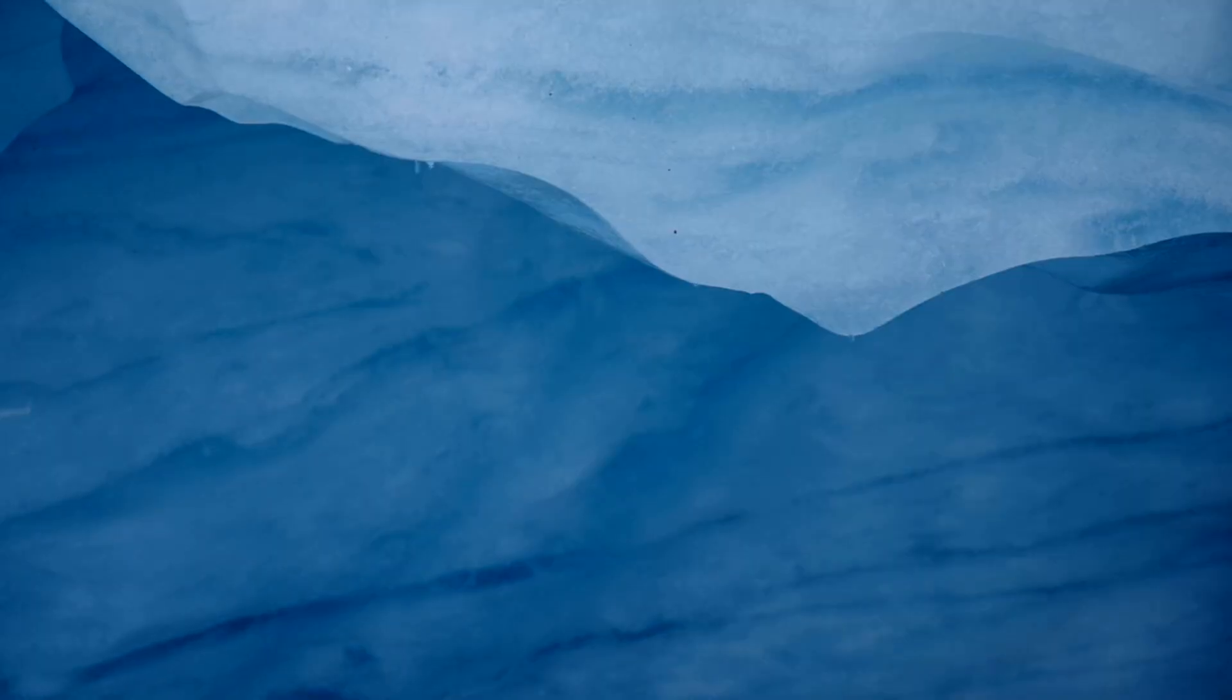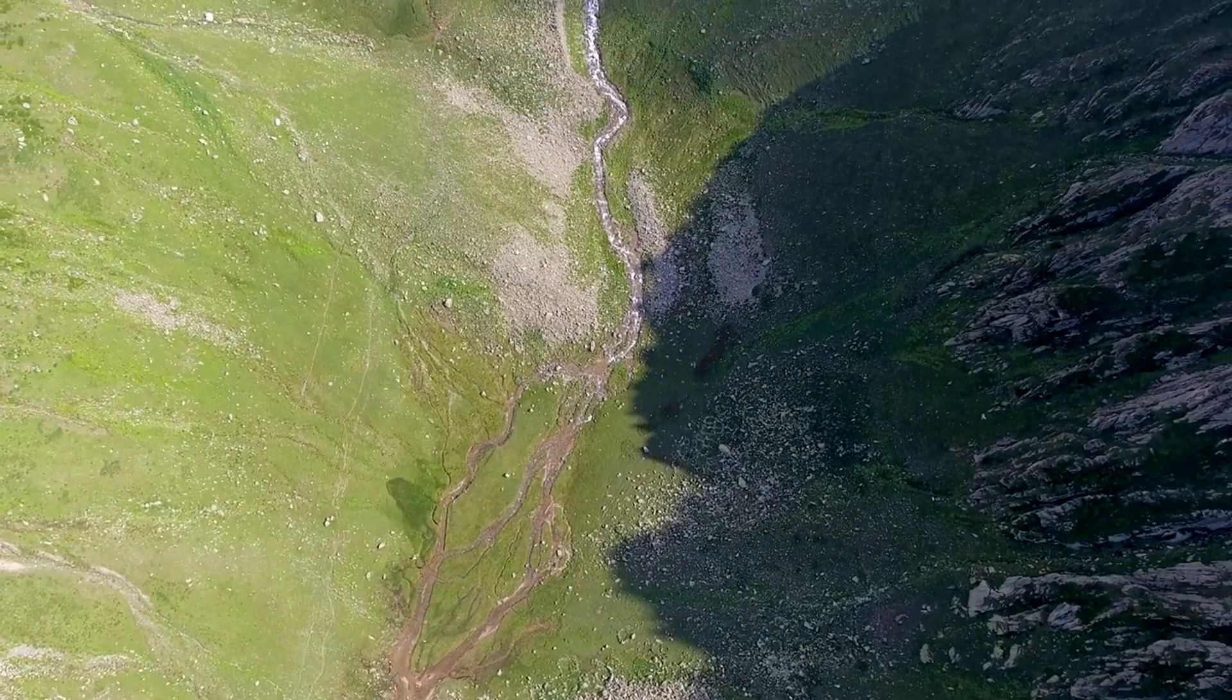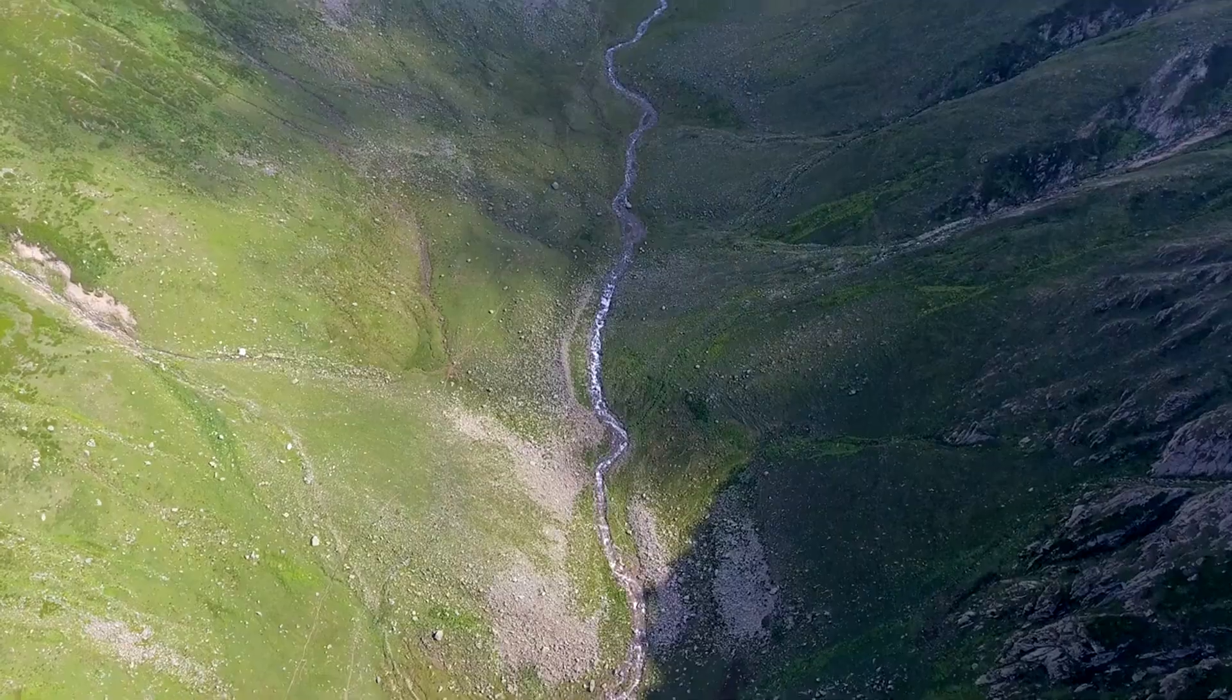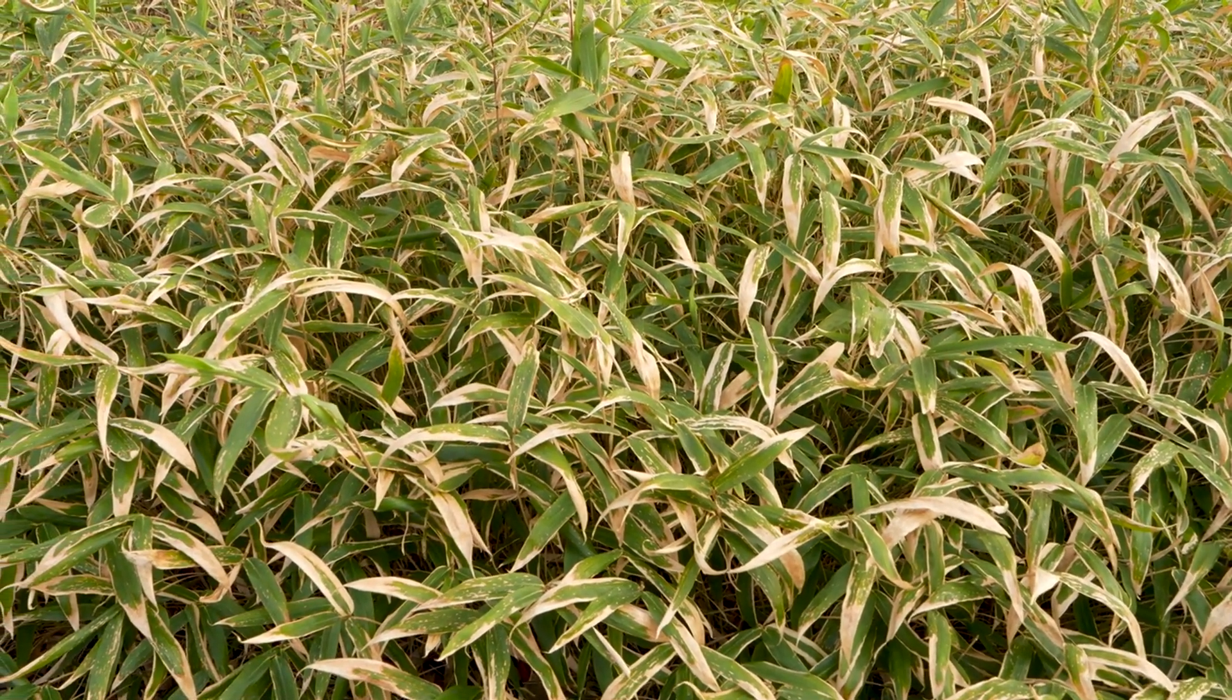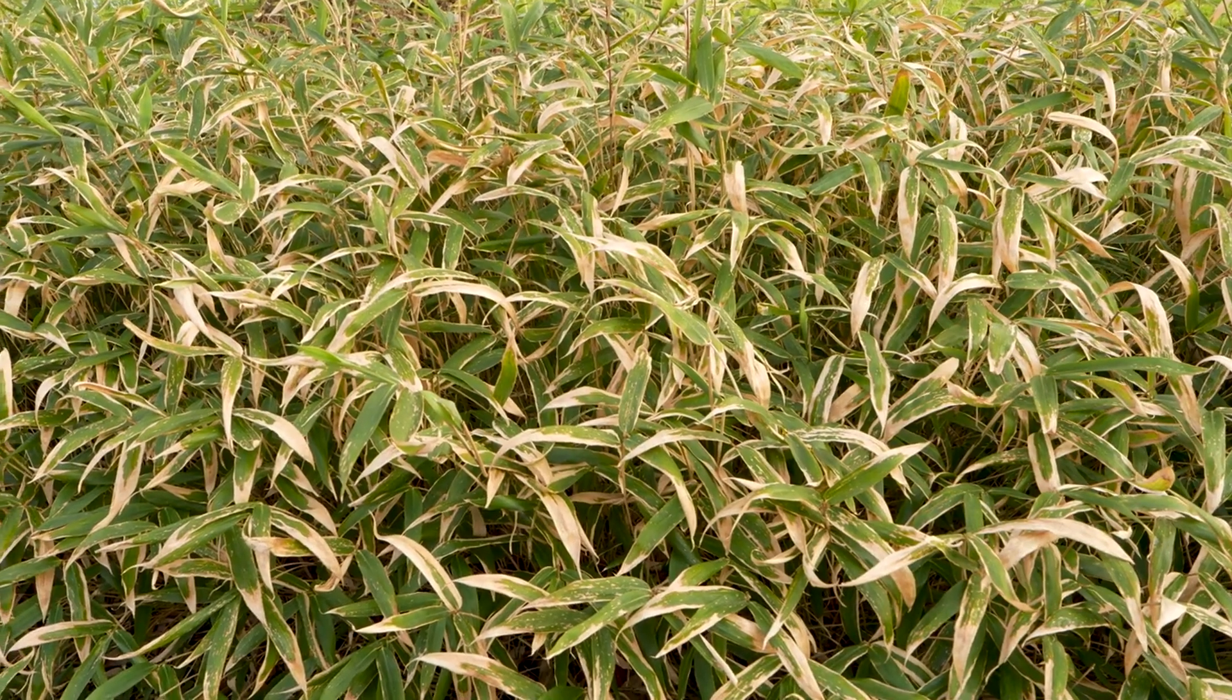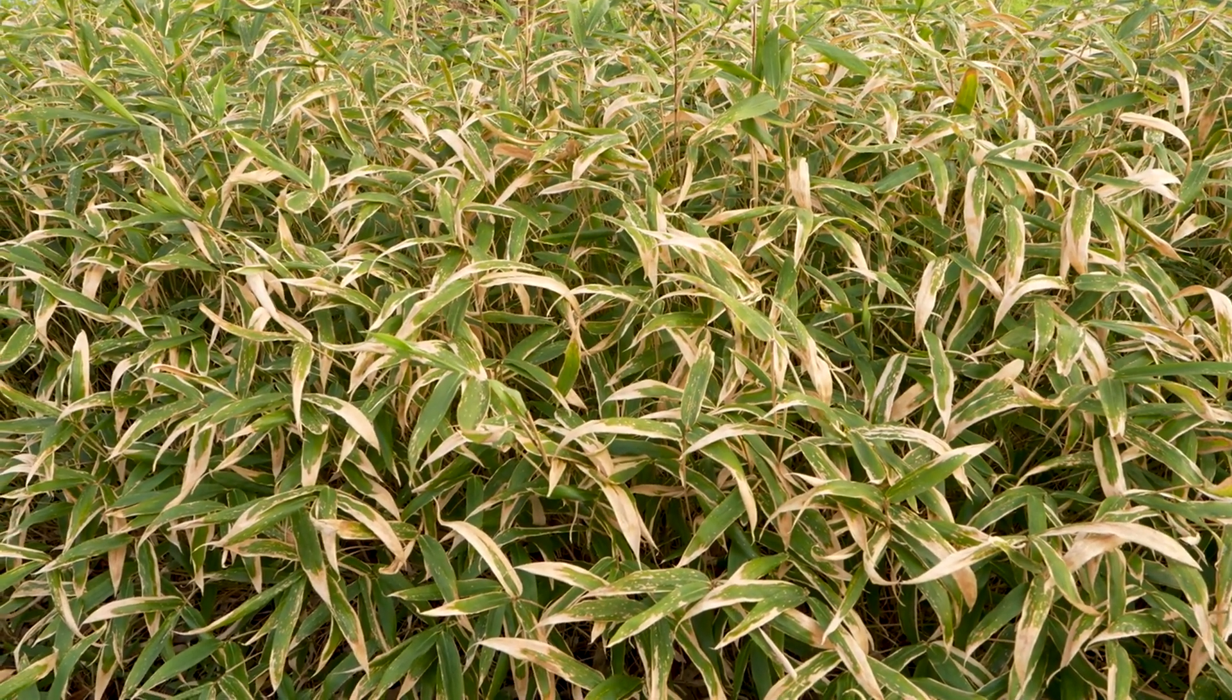The Cryogenian period is defined stratigraphically by distinct glacial deposits found on multiple continents. These deposits include diamectides, dropstones, and glaciogenic sediments, all indicative of extensive ice coverage. The period follows the Tonian, which was characterized by relatively stable environmental conditions, and precedes the Idiacheron, known for the emergence of macroscopic multicellular life.